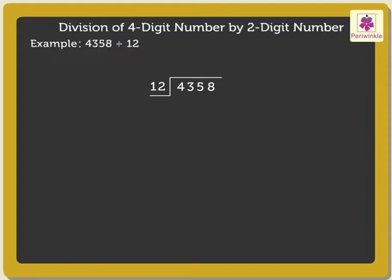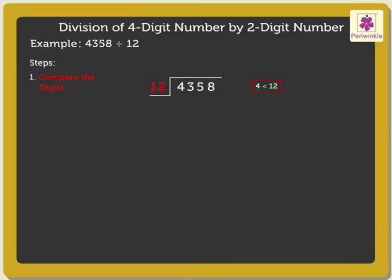To solve this simple division, there are five steps. Step one is to compare the digits. We compare the leftmost digit — that is, the thousands in the dividend, which is four — with the divisor twelve. As four is smaller than twelve, we compare the hundreds in the dividend with the divisor. Here, forty-three is greater than twelve.